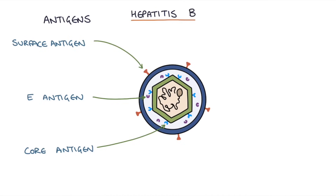The surface antigen — the hep B surface antigen — is found on the surface of the hepatitis B virus. If the hepatitis B surface antigen is positive in the blood, we know that the person is infected with hepatitis B. If there's no hepatitis B infection, the virus wouldn't be releasing the surface antigen into the blood, so you'd get a negative result.